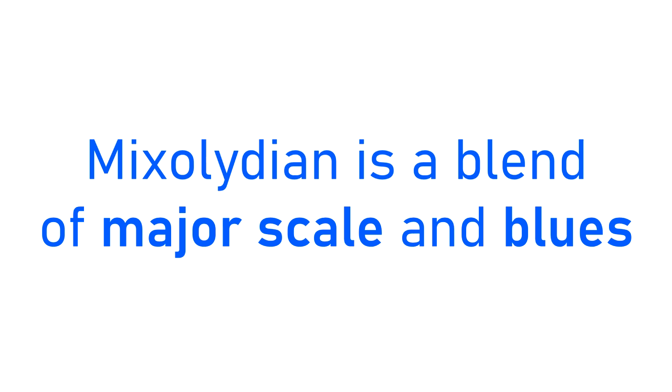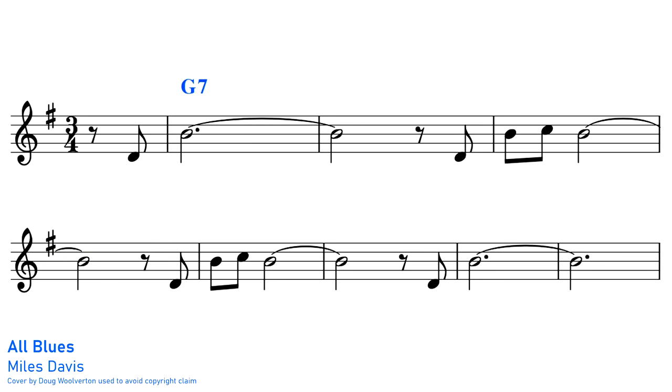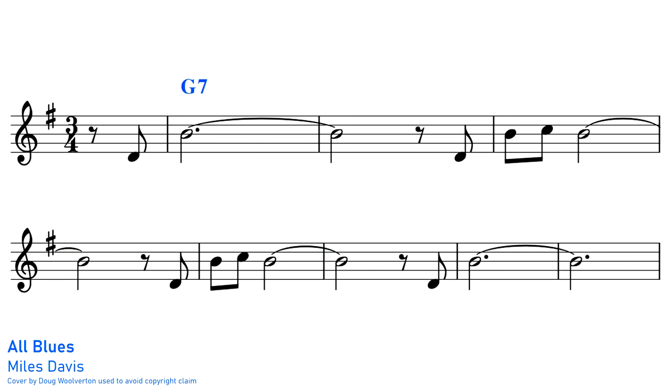Mixolydian is often thought of having a bluesy sound. In fact, Mixolydian is almost like a halfway house between the major scale and the blues scale. Mixolydian has the lowered 7th degree of the blues scale, but not the minor 3rd or lowered 5th. Miles Davis' All Blues, from his iconic modal jazz album Kind of Blue, is based on the G Mixolydian scale. As you can hear, this piece is very much a blues, but with a slightly brighter edge thanks to the major 3rd of the Mixolydian scale.